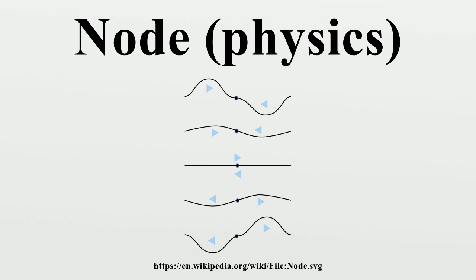The opposite of a node is an anti-node, a point where the amplitude of the standing wave is a maximum. These occur midway between the nodes. Standing waves result when two sinusoidal wave trains of the same frequency are moving in opposite directions in the same space and interfere with each other.